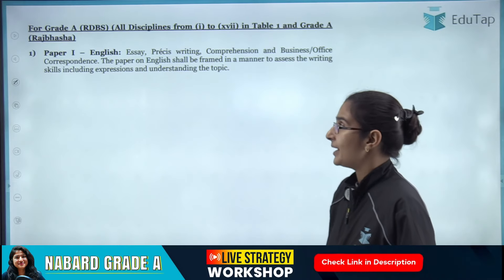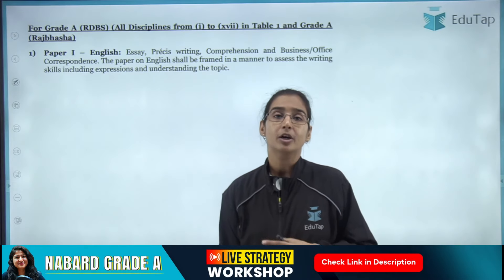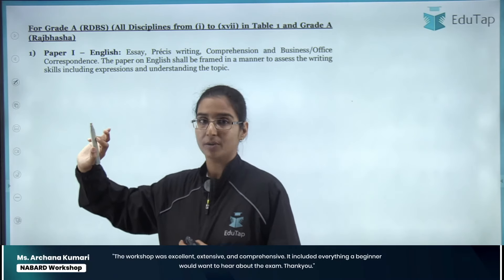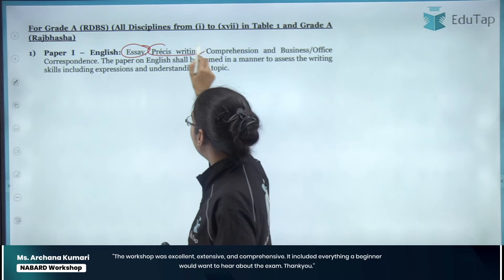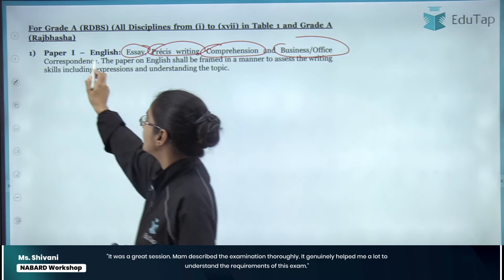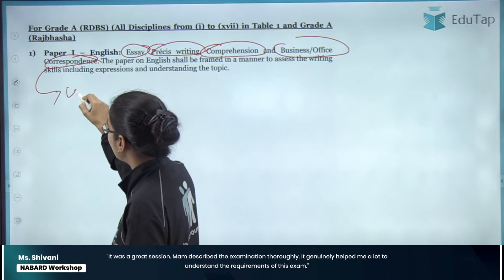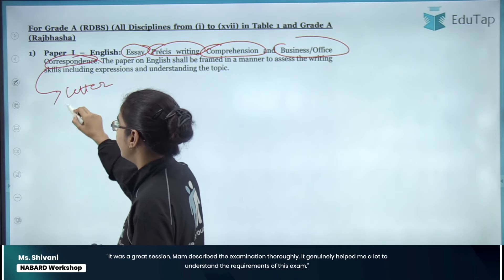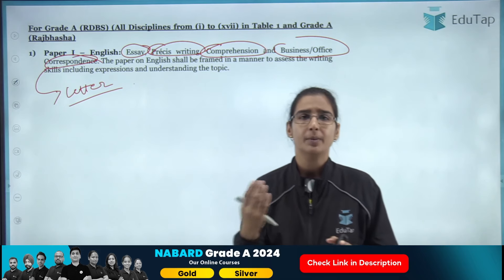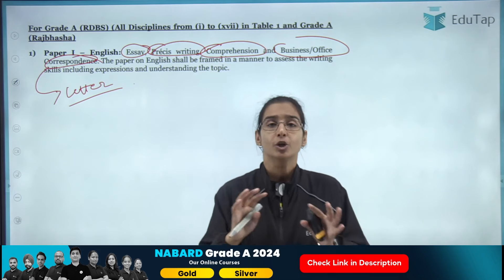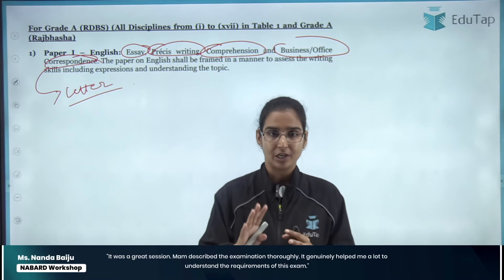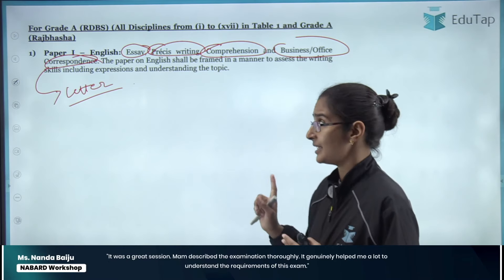Now coming to the syllabus — for Paper 1, General English, the syllabus is given in the notification itself. There will be essay writing, precis writing, comprehension, and business and office correspondence, which basically means letter writing. Sometimes reports also appear as an option. So these 4 topics are the ones from which the 3 questions are primarily drawn.